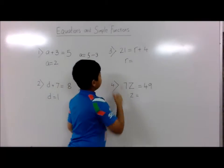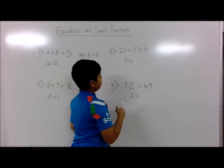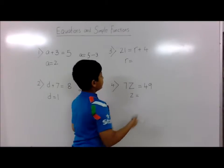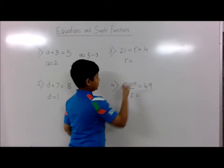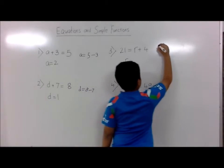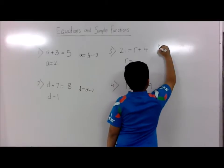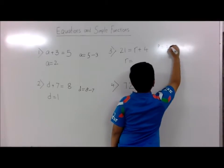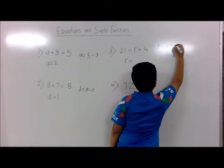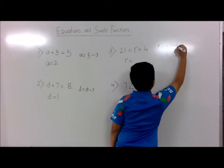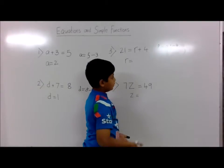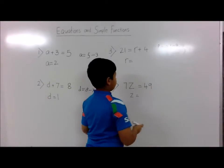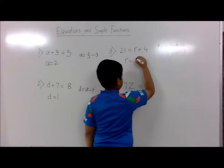Third question: 21 is equal to r plus 4. Otherwise, r is equal to 21 minus 4. 21 minus 4 is 17, so r is equal to 17.